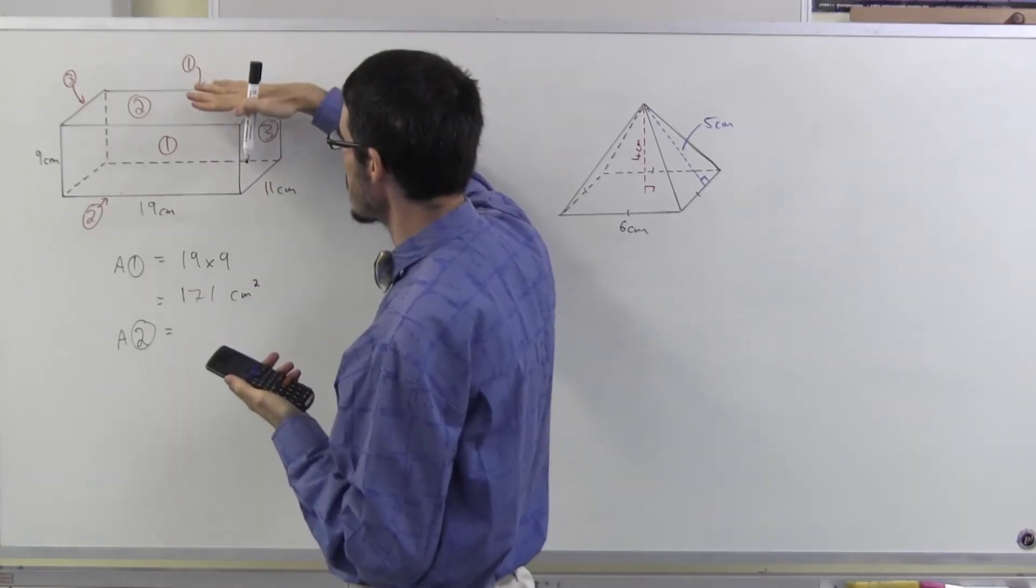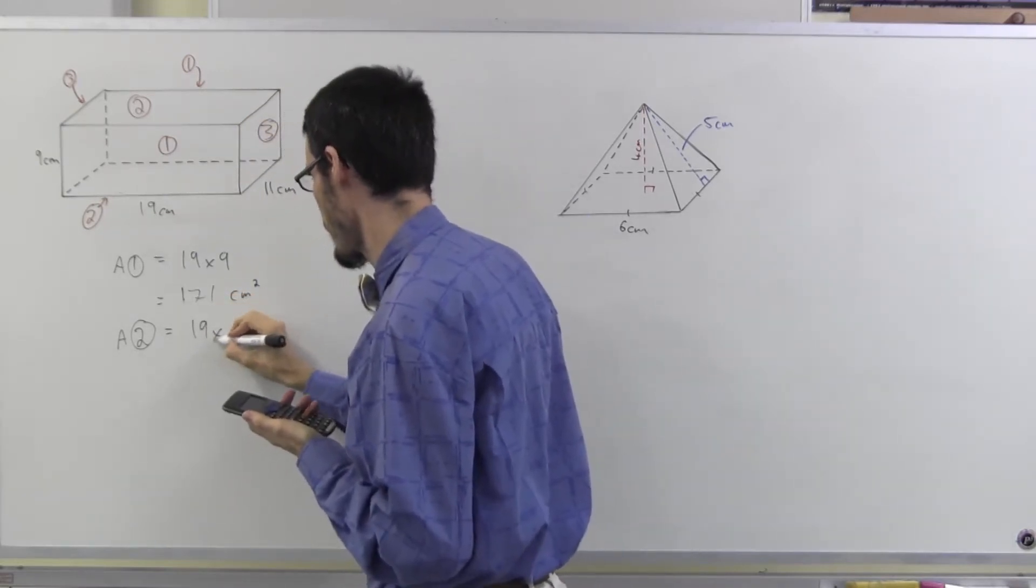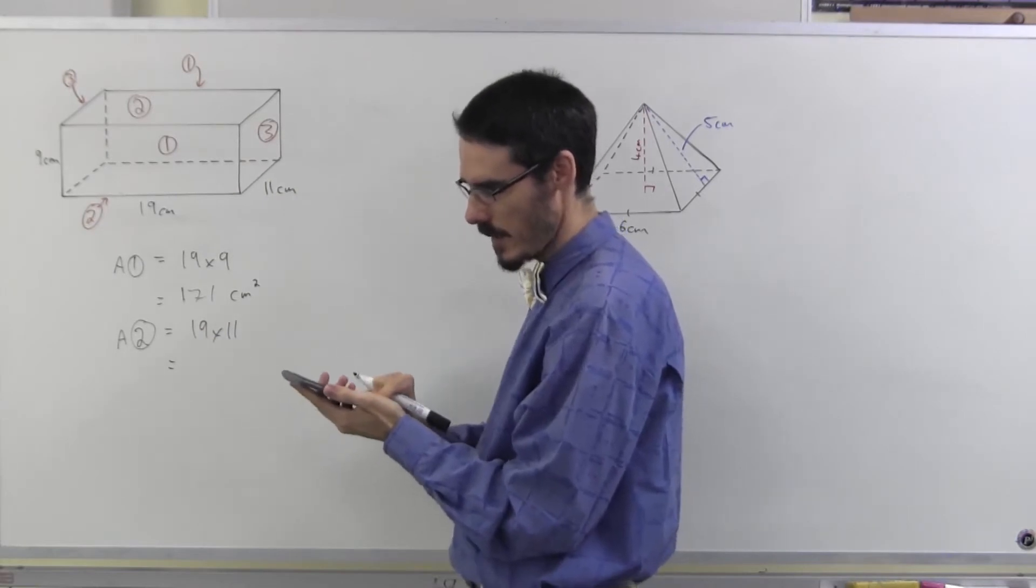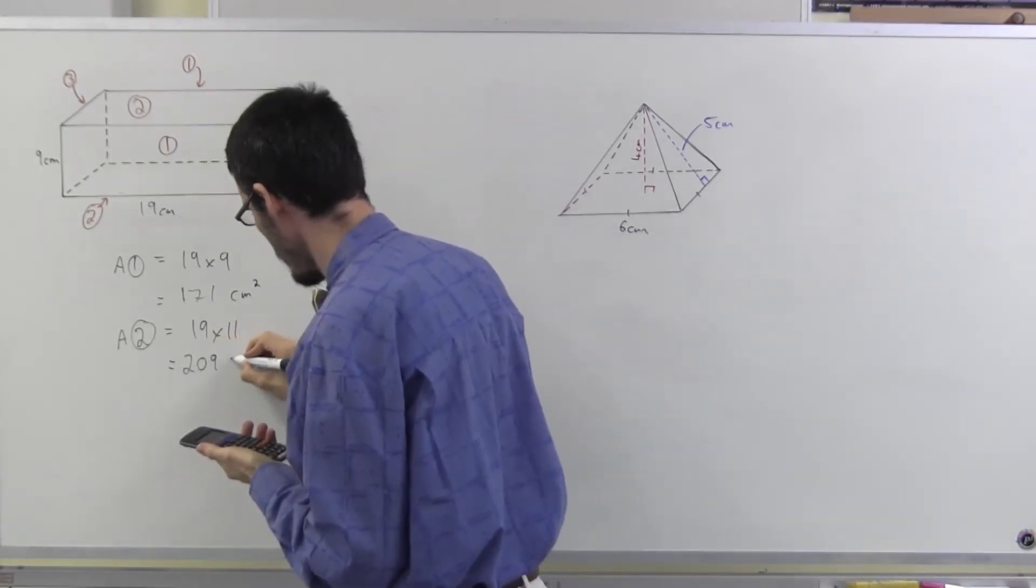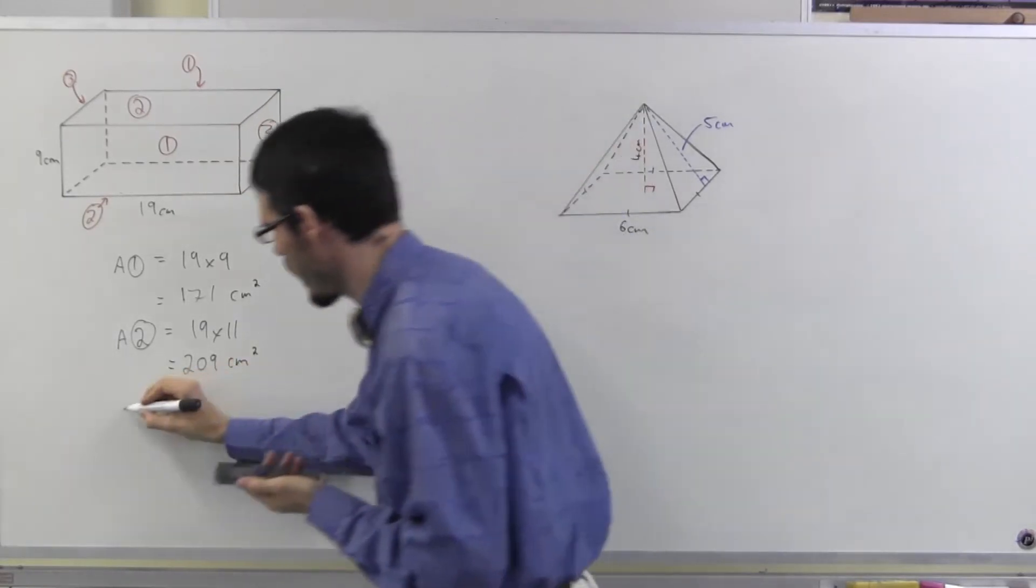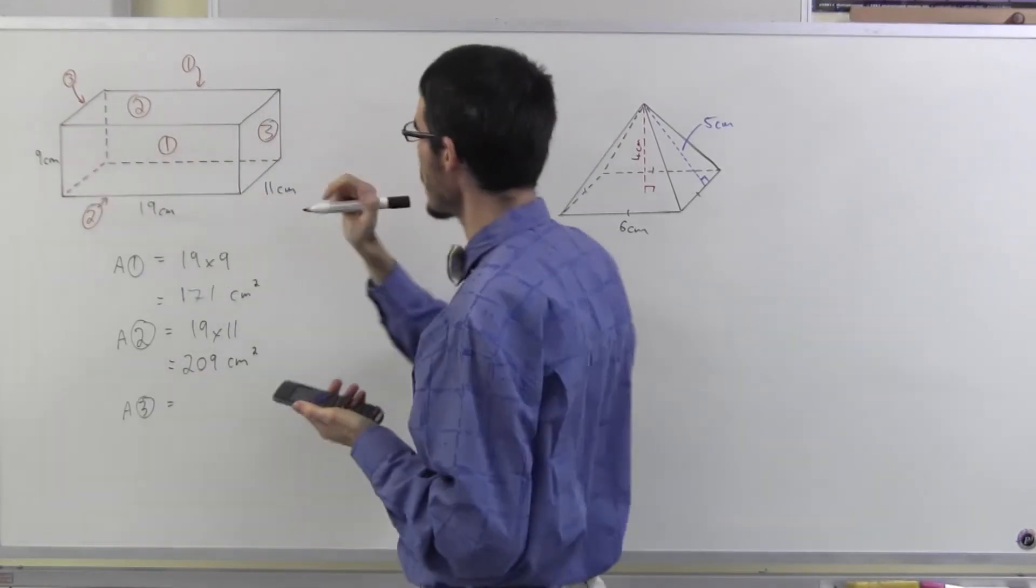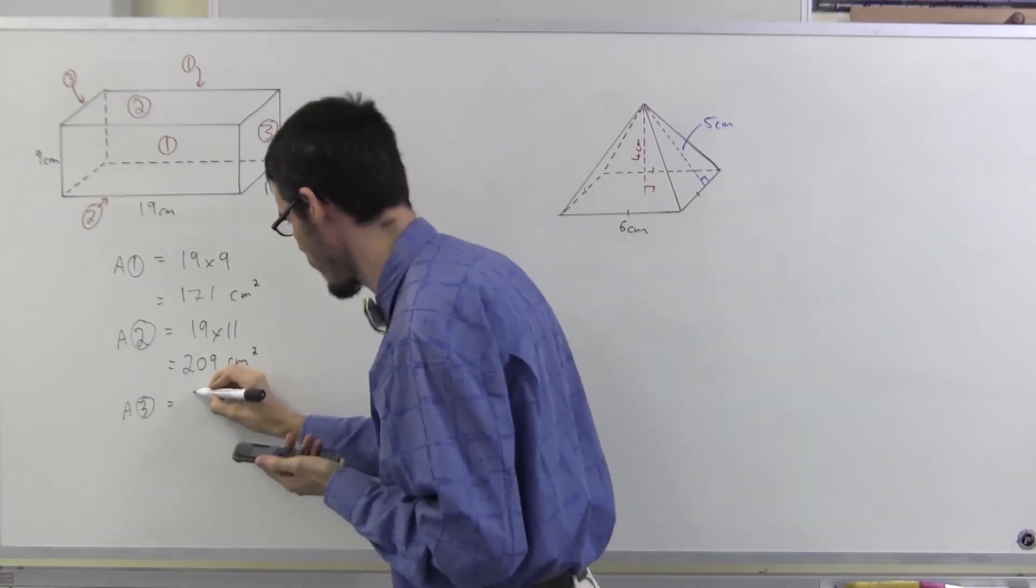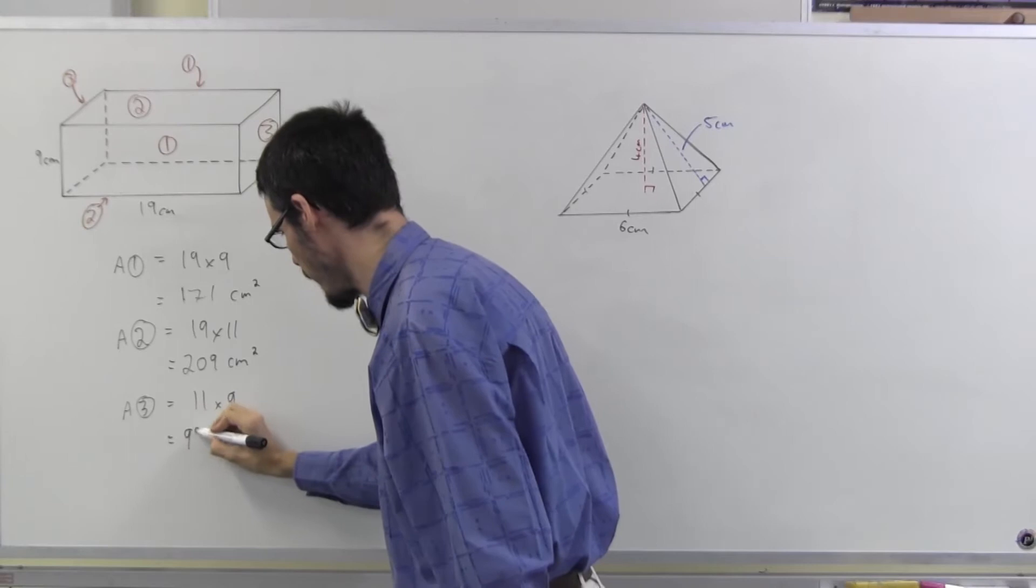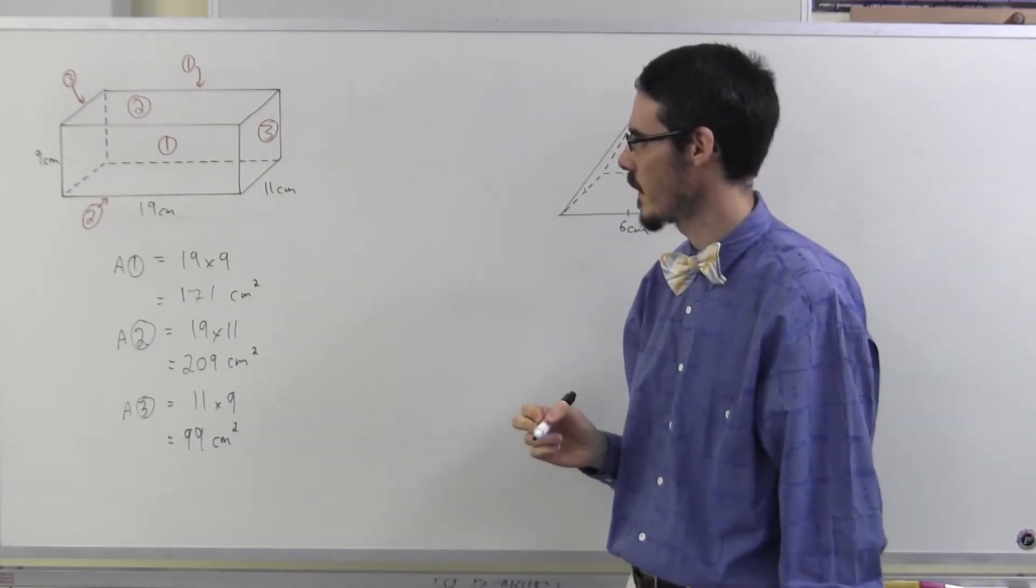And area two. Two is the top and the bottom. 19 by 11. 19 times 11, 209 square centimeters. And area three. Three is the two ends. So each end is going to be 11 by 9, which is 99 square centimeters. Okay.